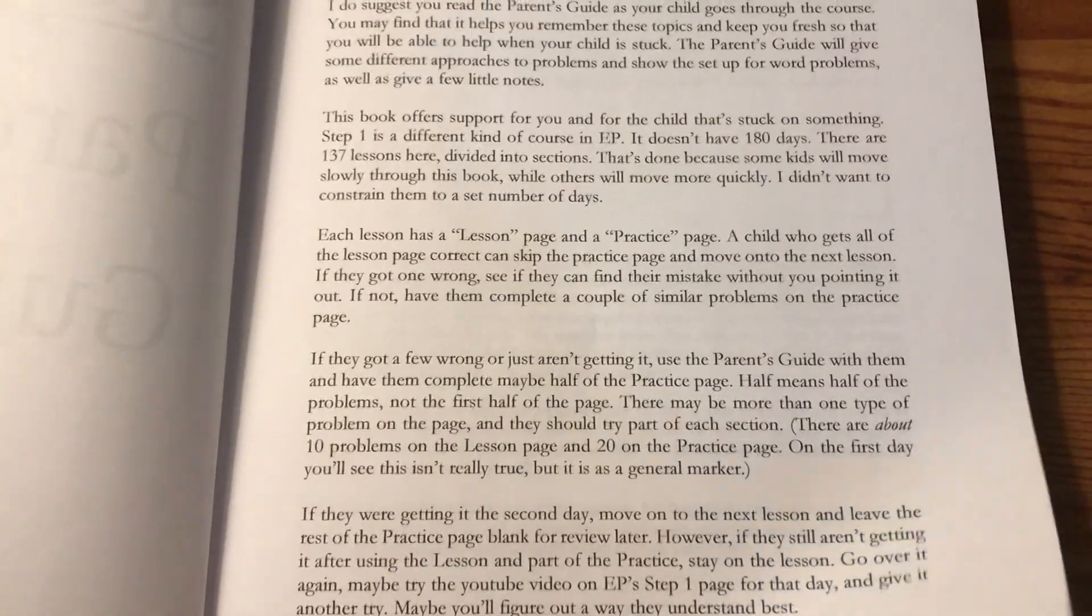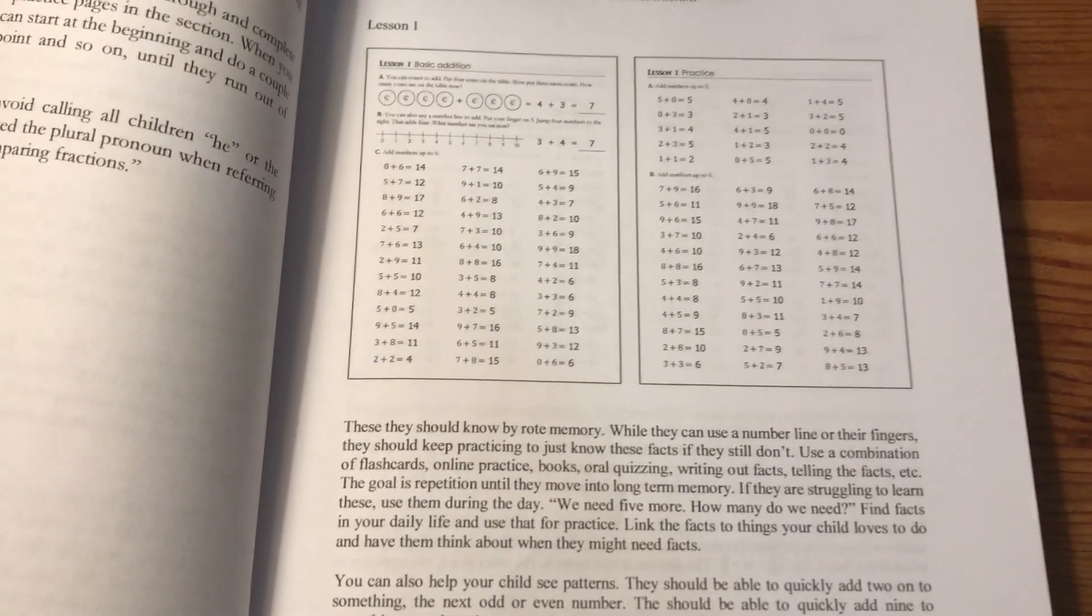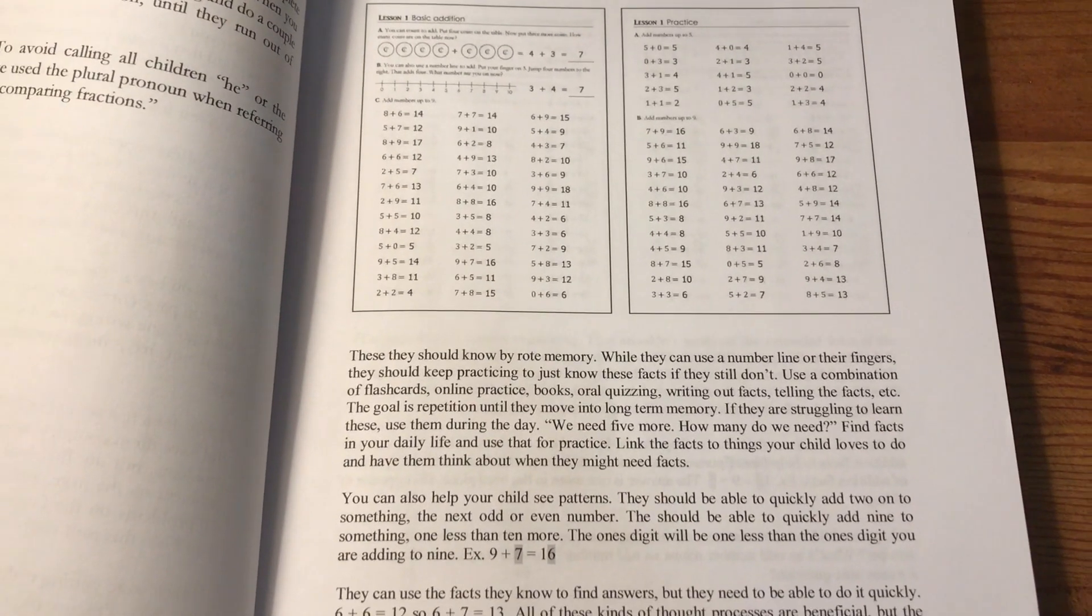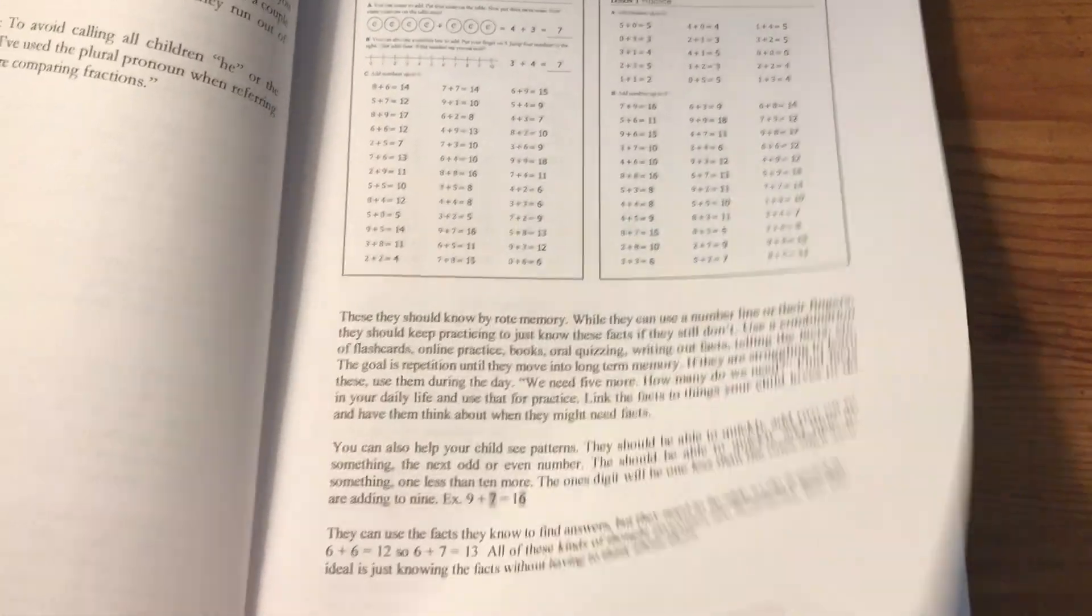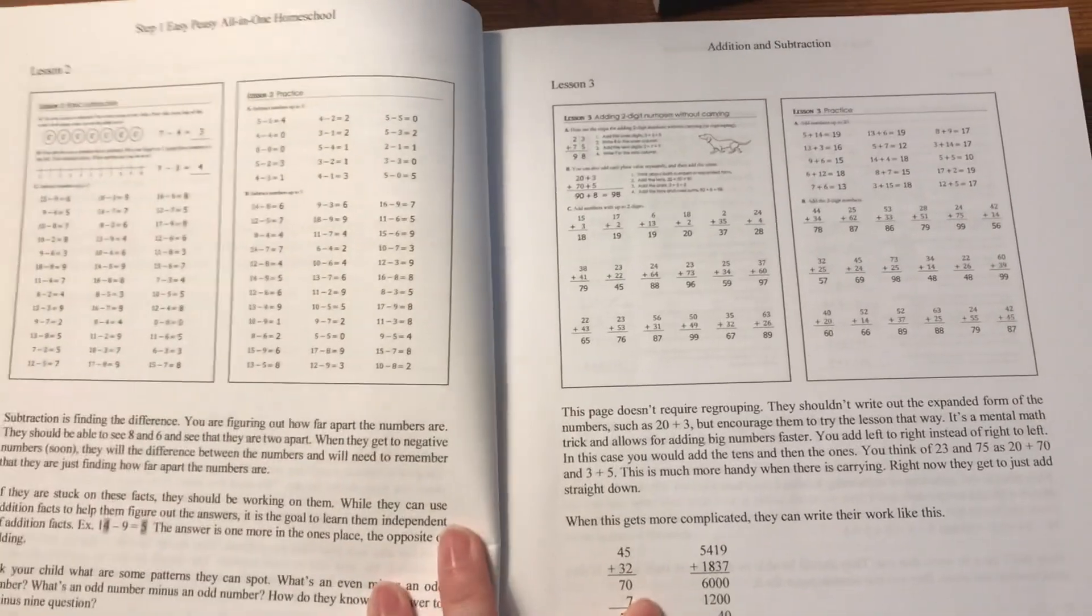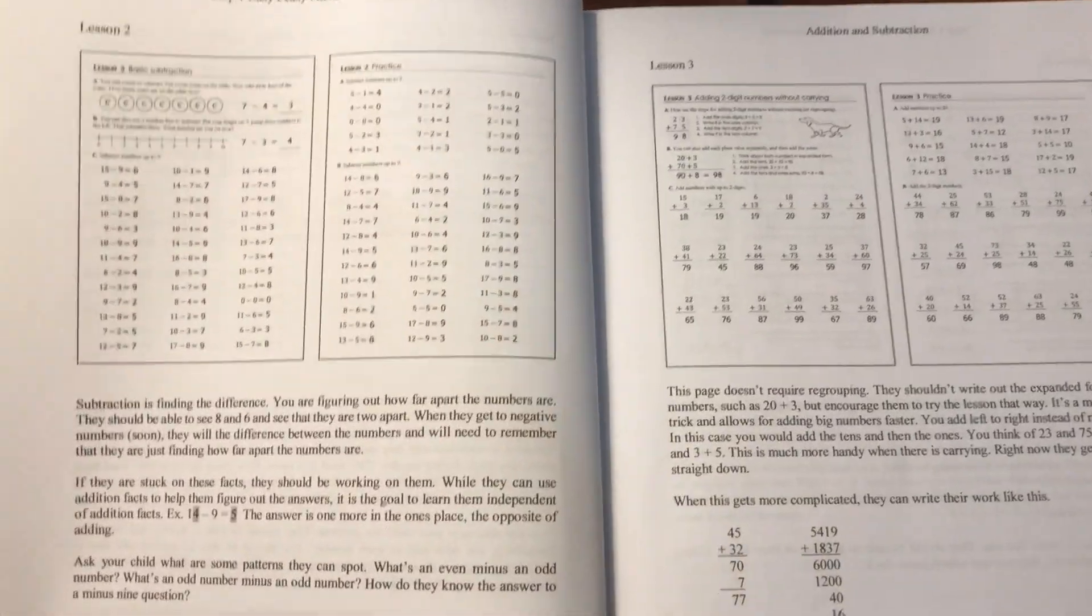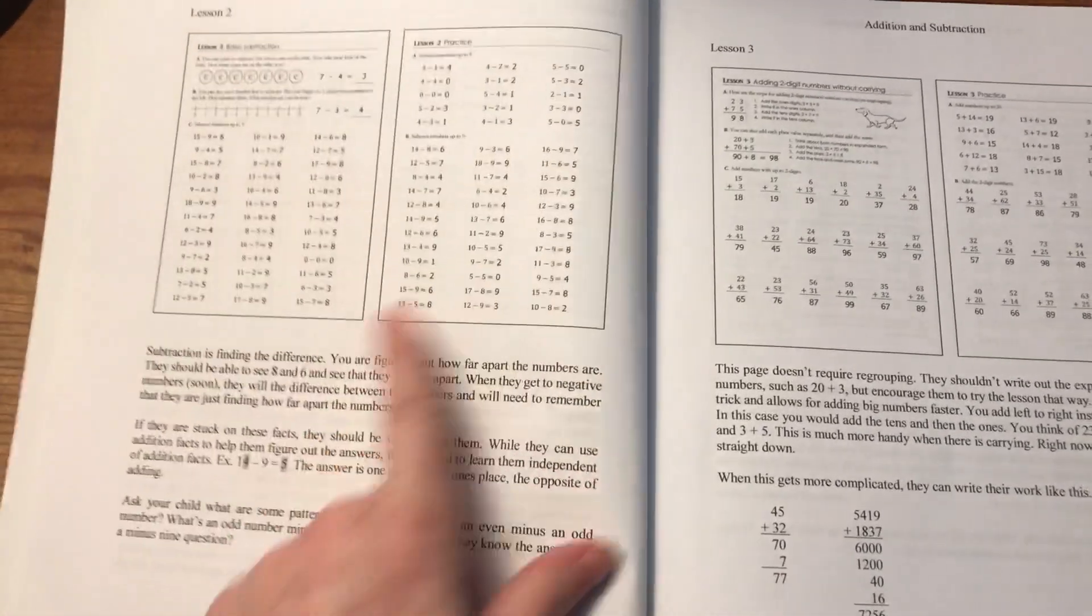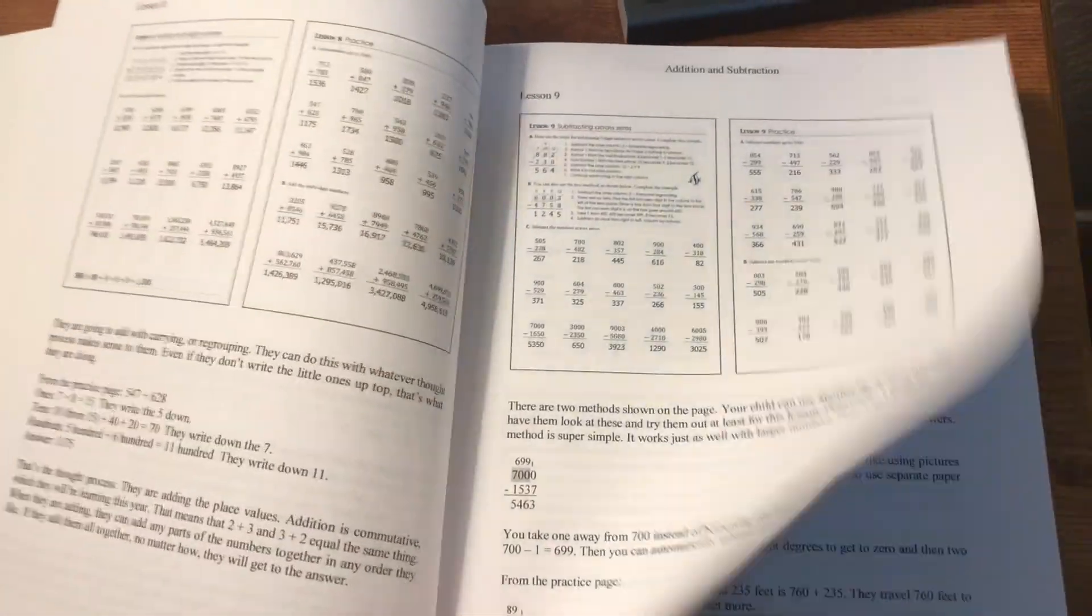I mainly wanted to read that portion to you. So there's only 137 lessons in this book, which is fabulous for us because we don't do 180 homeschool days a year. So when I have a curriculum that has 180 lessons, that means we're doubling up on some lessons every week and I don't love that. So I really do appreciate that this only has 137 lessons so we can just do one lesson a day.